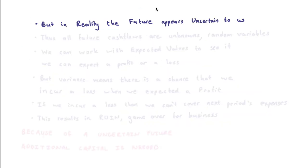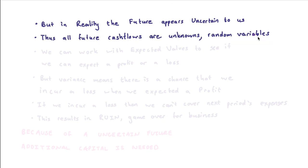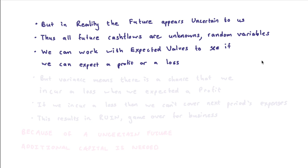In reality, the future is definitely uncertain to us. This means all future cash flows are unknown, and we can model them with random variables. When you start a business, you don't know if you're going to sell 10, 20, or 30 of your product in the next month. If you've done your market research and spoken to customers, you can work with some expected value. But it's important to appreciate that these still are random variables — no matter how much research you do, there's still going to be variance.